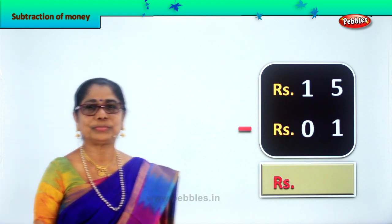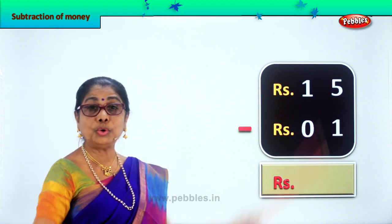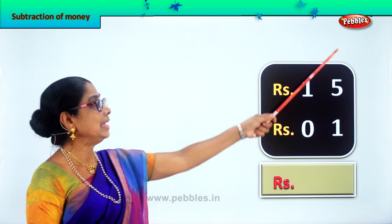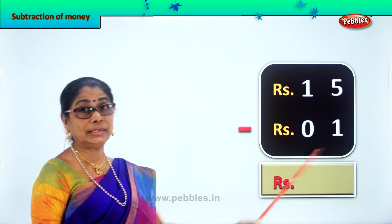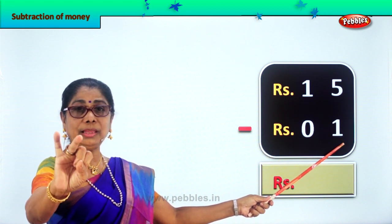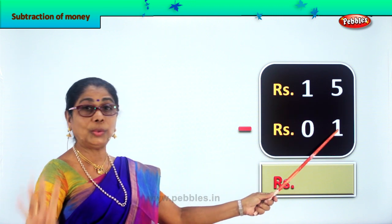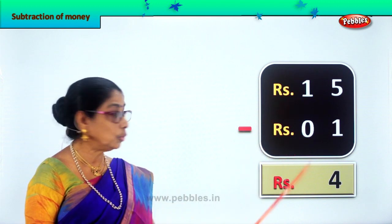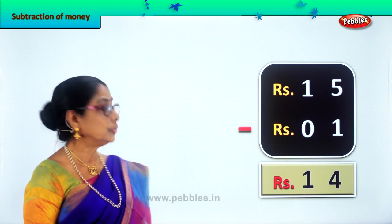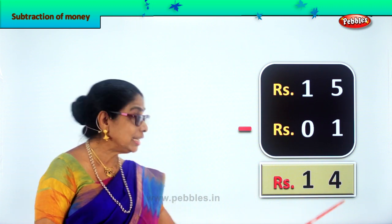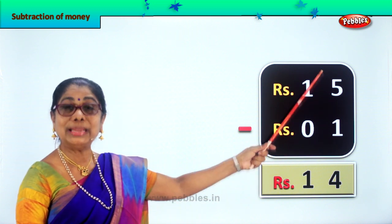Let's take another sum. You are given rupees 15 take away rupees 1. In the ones place you have 5 rupees minus 1 rupee — 5 take away 1 gives you 4. So we write 4 in the ones place. In the tens place you have 1 minus 0 — 1 take away 0 gives you 1 itself. Rupees 15 minus rupees 1 is equal to rupees 14. Did you enjoy subtraction of money?